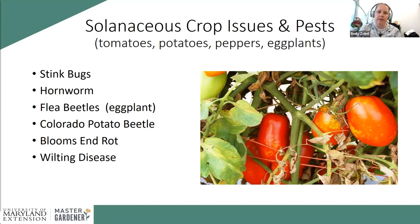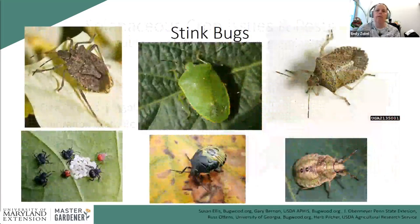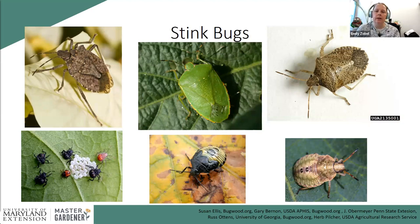Now moving into solanaceous crops — the summer favorites: tomatoes, potatoes, peppers, eggplant. I've already covered flea beetles, but note they can be an issue on eggplant early in the season. Once your eggplant transplants get larger than about six inches, you generally don't have to worry about them much anymore. Some diseases to be aware of include blossom end rot and a few wilting diseases, which I'll touch on shortly.